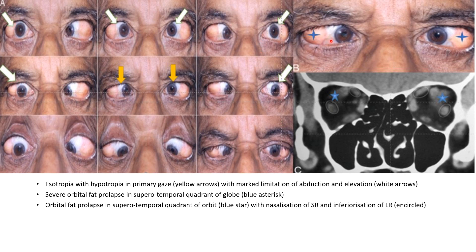There is also severe orbital fat prolapse in the supra-temporal quadrant of the globe. The CT scan also shows orbital fat prolapse in the supra-temporal quadrant, along with nasalization of the superior rectus and inferiorization of the lateral rectus. This is a case of bilateral myopic strabismus fixus.